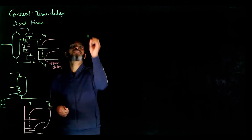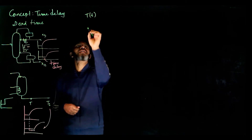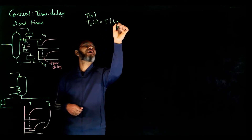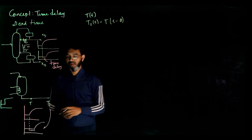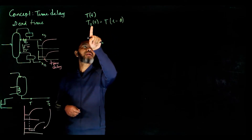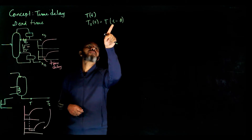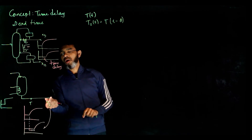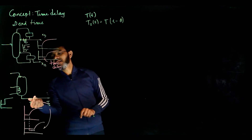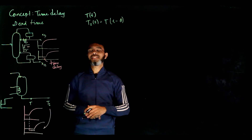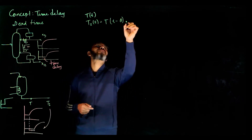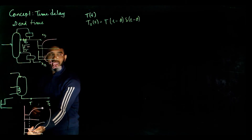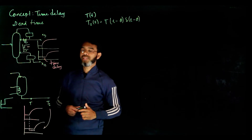Now how to express this mathematically. If we have T1 as a function of T2, then T1 can be expressed as T(t minus θ), where θ is the time delay. This simply means that what you observe at T1 now is the same as what happened at T a time θ earlier. To be mathematically correct, we multiply by a step function, meaning that before time θ the value is 0 and after time θ it equals T(t).